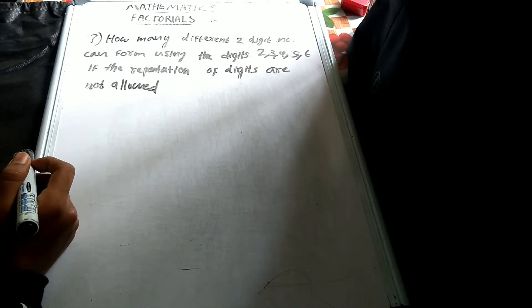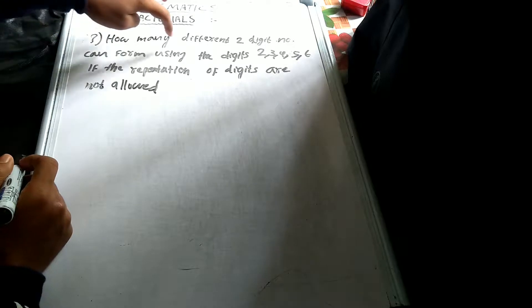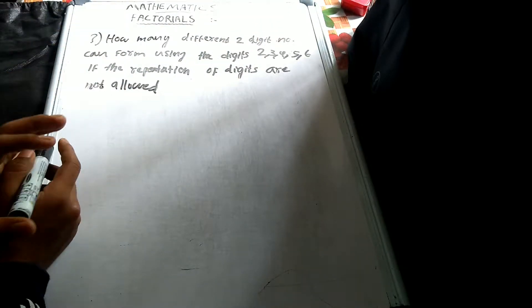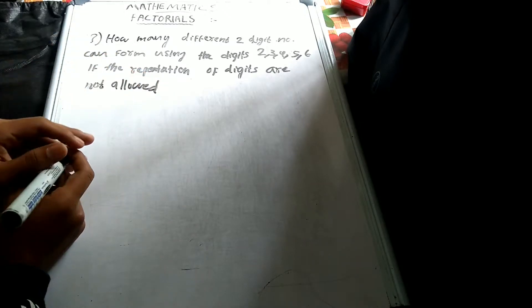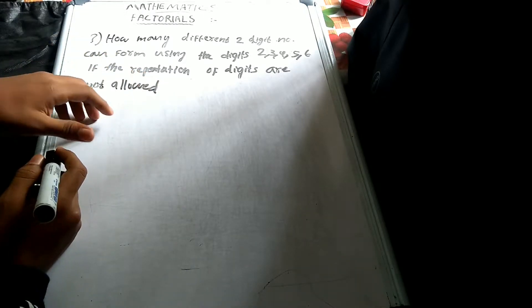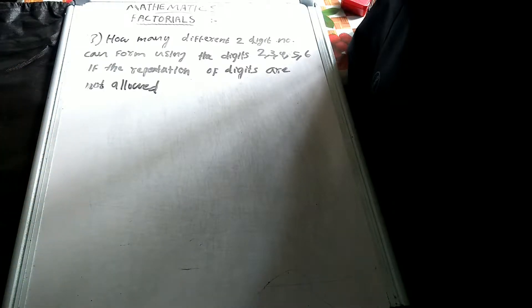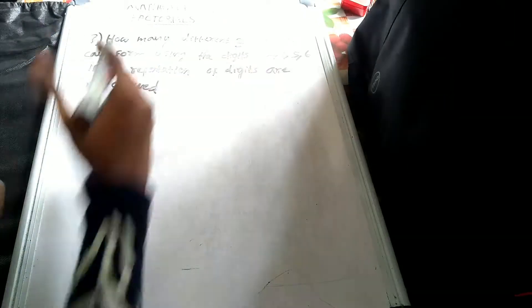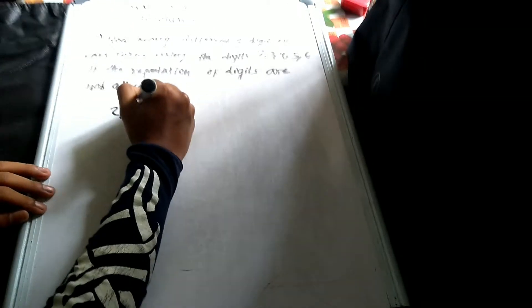Next question: how many different two-digit numbers can be formed using the digits 2, 3, 4, 5, 6 if repetition of digits is not allowed? Two-digit numbers using digits 2, 3, 4, 5, 6.